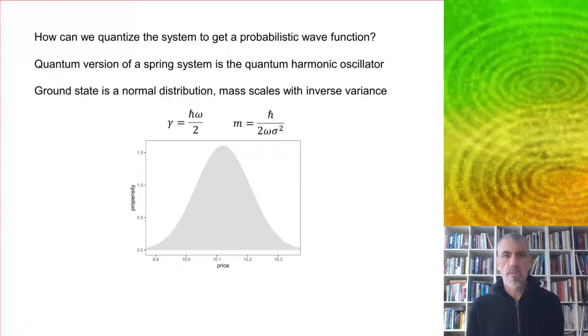So how can we quantize the system to get a probabilistic wave function? The quantum version of a spring system is just the quantum harmonic oscillator. The ground state of this is a normal distribution, and the mass scales with the inverse variance. This allows us to get an expression for the mass in terms of the inverse variance.